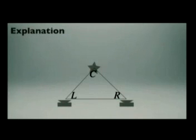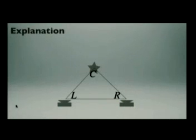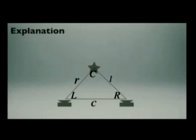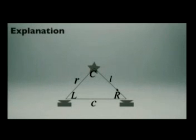We want students to identify that the central object and the two cameras form a triangle and have them sketch that on paper. We help them define the left angle, the right angle, and the center angle, with their opposite sides represented by lowercase l, lowercase r, and lowercase c respectively. If we know any three of these we can figure out the others. We know the separation distance between the cameras, we measure the two angles, and from that we can figure out the distances and exactly where the object is.